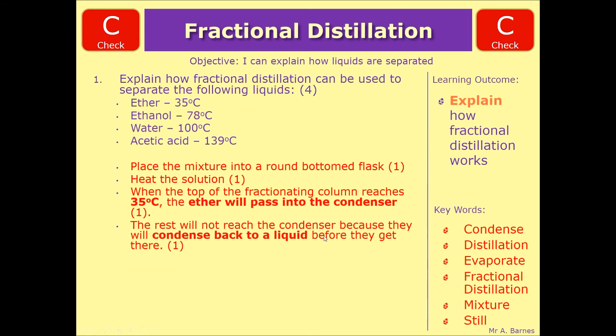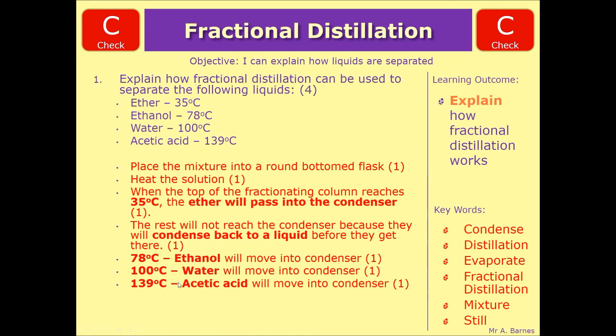So saying that the rest of those liquids will not have got to the boiling point that will take them into the condenser. So they will condense, turn back into the liquid before they get there. The final few points are looking at the other three boiling points then. So saying at 78 degrees ethanol will move into the condenser and be collected. Then when the top of the condenser gets to 100 degrees the water will move into the condenser and then at 139 your final one acetic acid will be there.